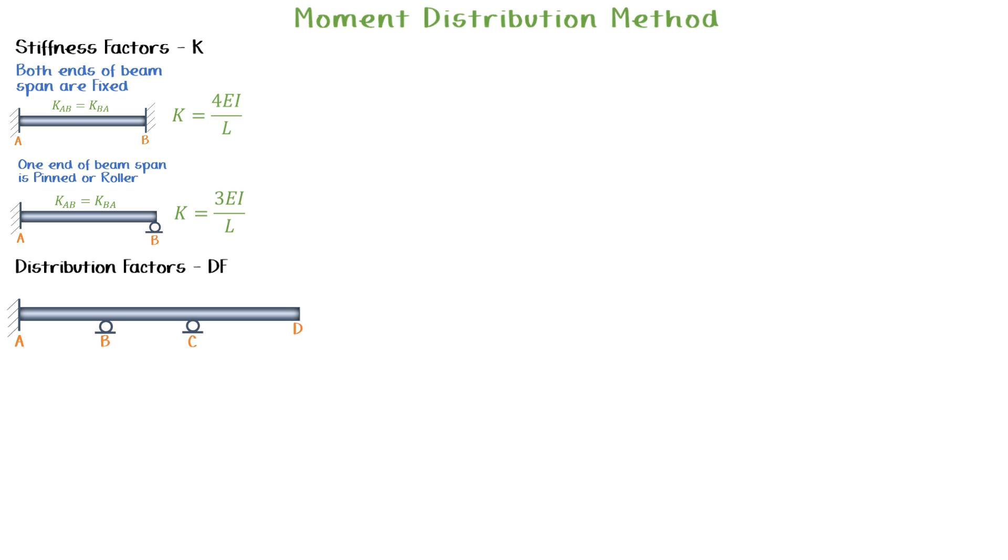Node A is fixed, so it will not distribute any moment. Therefore, distribution factor from A to B is zero.